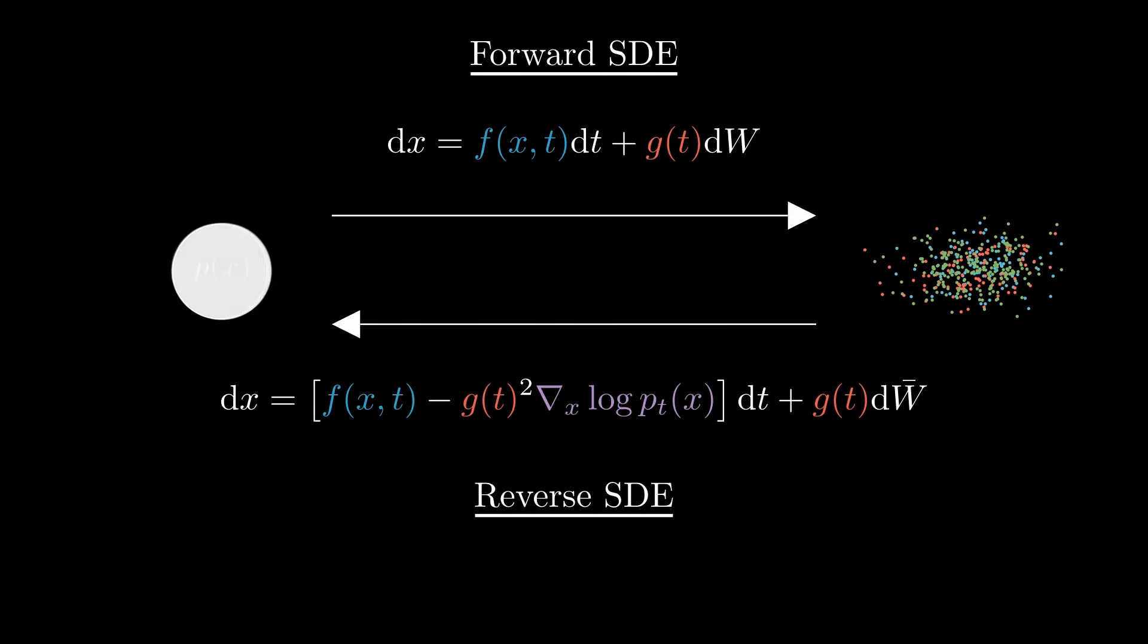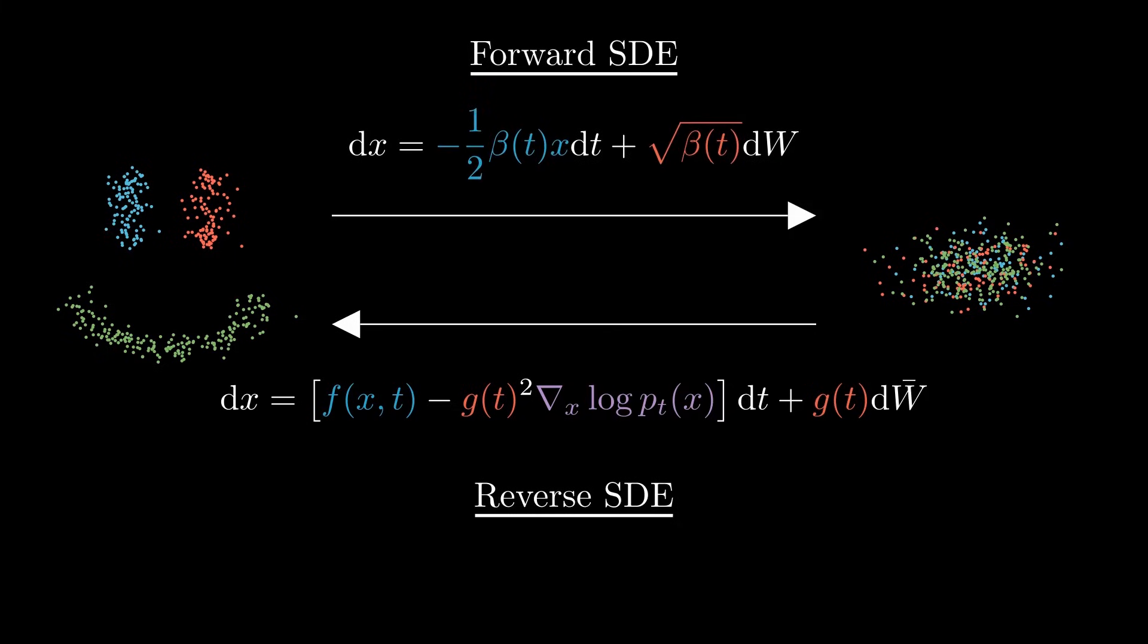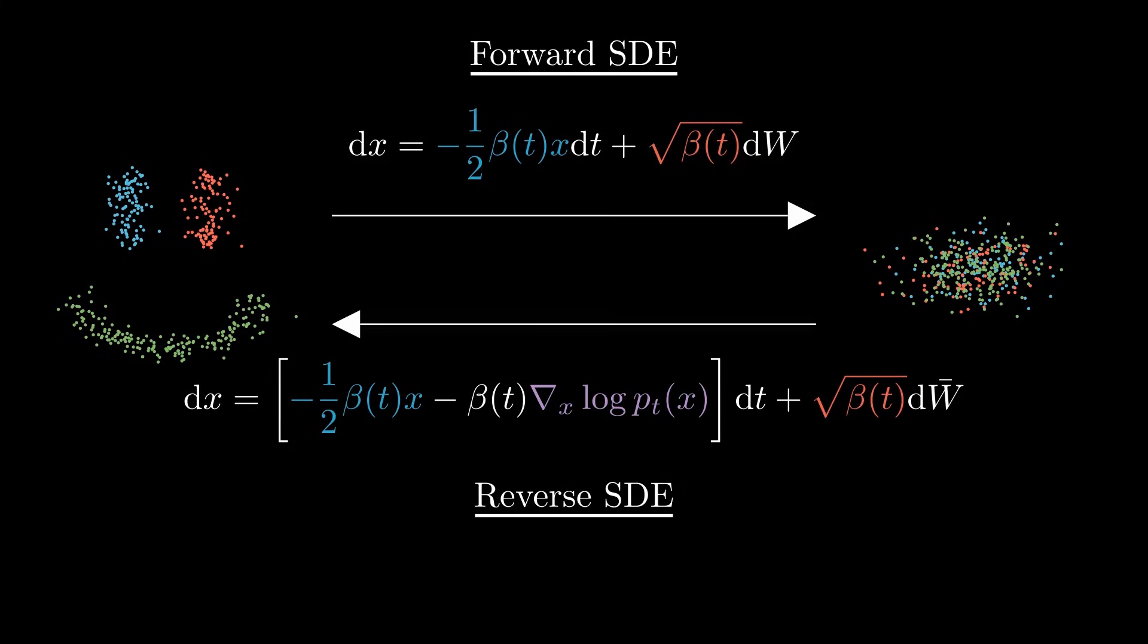Since the continuous version of the DDPM forward process is just a special case of an Ito equation, one that gradually pushes data toward a Gaussian, it means we should in principle be able to reverse it. And with this reverse SDE, we'll get back our original data distribution. So let's take a closer look at this reverse SDE. We already know that beta t is our noise variance schedule, so the only thing we don't yet know is this new term, which we usually call a score function.